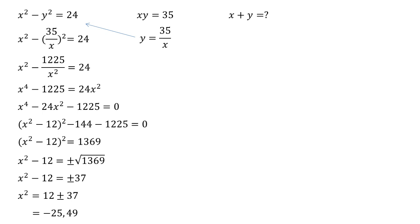We've now got two cases to solve. Let's start off with the positive one. So if x squared equals 49, x must equal plus or minus 7. Using our y equals 35 over x we'd get that y equals 35 over 7 when x is 7 and 35 over minus 7 when x is minus 7. Hence plus or minus 5.